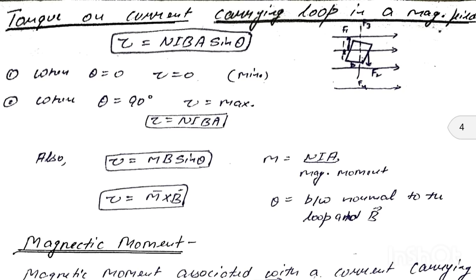If θ = 0°, torque is minimum (zero). If θ = 90°, torque is maximum = NIBA. The torque can also be written as: τ = mBsinθ, where m = NIA is the magnetic moment. In vector form: τ = m × B. The angle θ is between the normal to the loop and the magnetic field.